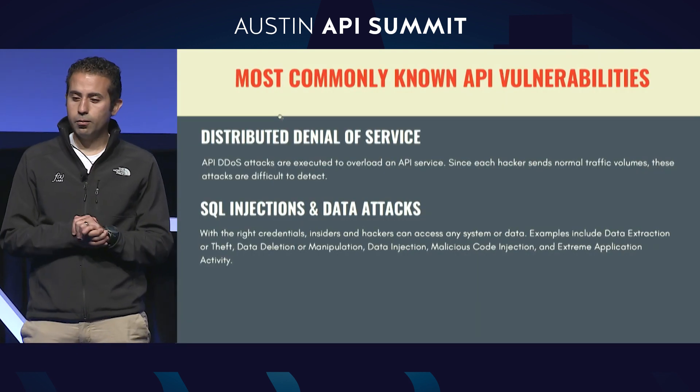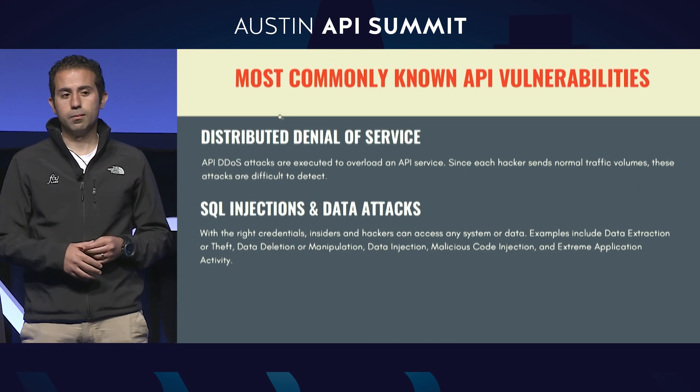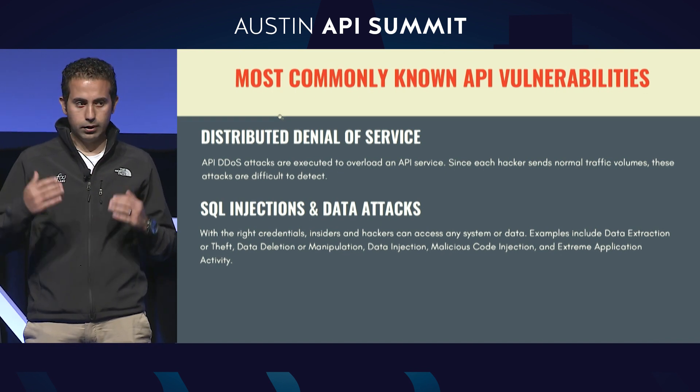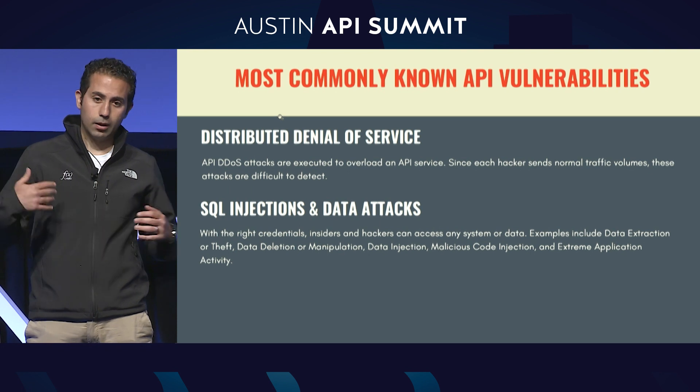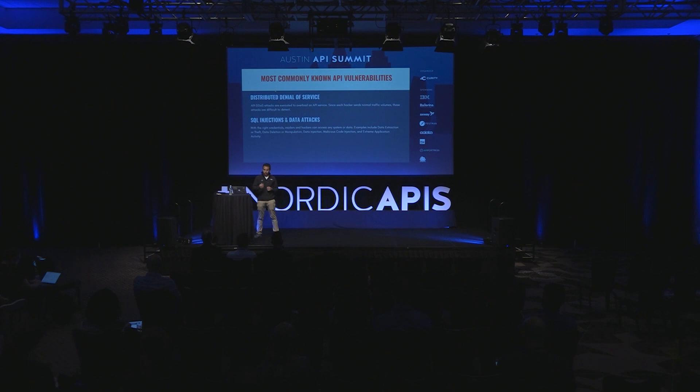Let's first talk about the more commonly known API vulnerabilities. With distributed denial of service, an attacker is trying to overload your API service. A lot of API gateways have the rate limiting feature to reduce the number of requests coming into your application. But hackers are now doing denial of service with much fewer requests — sending big fat requests and seeing if your code allows the application to return thousands or millions of results in one request. The other main type is injection attacks, such as SQL code injections, where an attacker sends malicious code to tamper with or extract your data.